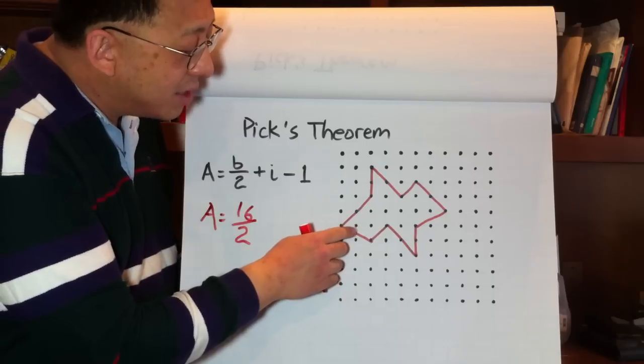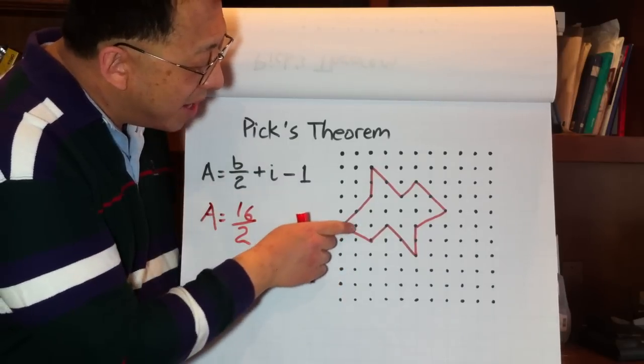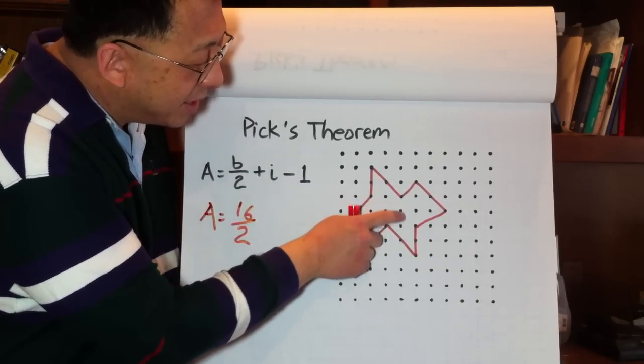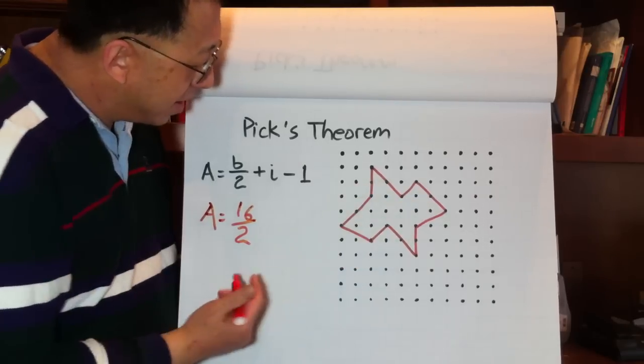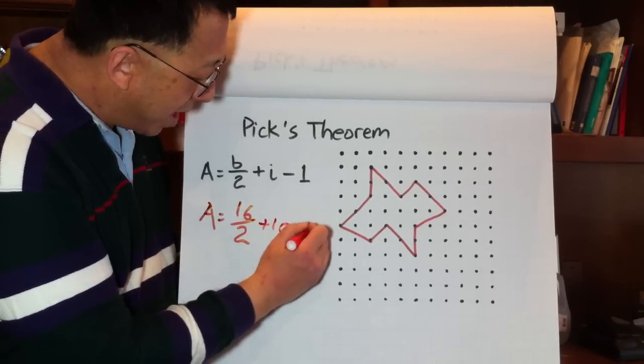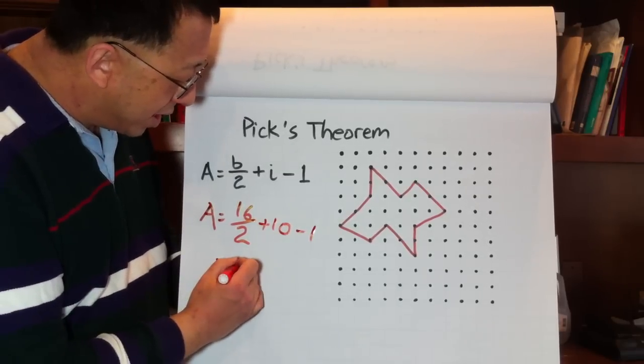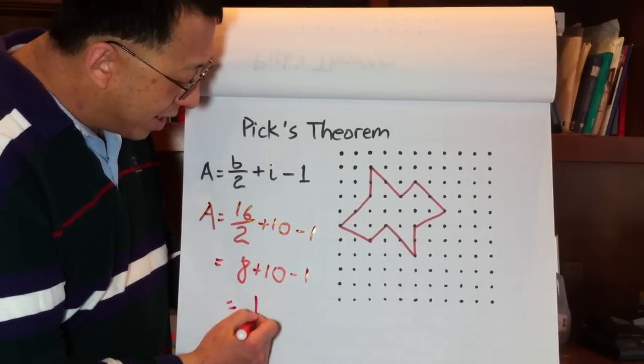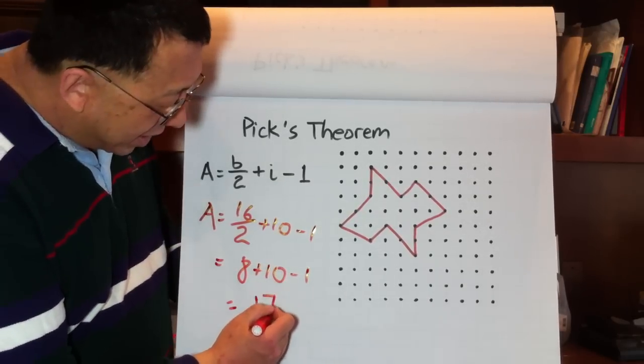So the area equals 16 divided by 2. We're going to count the number of lattice points in the interior. Let me try to do it in a systematic way. I'm going to go here. 1, 2, 3, 4, 5, 6, 7, 8, 9, 10. So there are 10 lattice points in the interior. So plus 10 minus 1. So the area here is 16 divided by 2 is 8, plus 10 minus 1. And the area is 17.